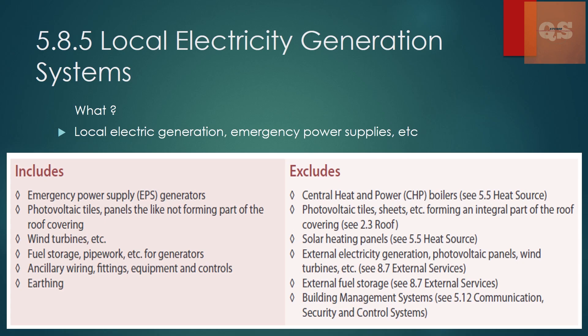Section 5.8.5 is the Local Electricity Generation System, which includes photovoltaic tiles and panels, EPS generators, wind turbines, fuel storage for generators, and wiring, fittings, equipment controllers. Exclusions include central heat and power boilers, which come under 5.5 heat source; photovoltaic tiles forming part of the roof, which come under 2.3; solar heating panels under 5.5; and external electricity under 8.7. Whatever is external goes under external services 8.7; whatever is internal is included under 5.8.5.